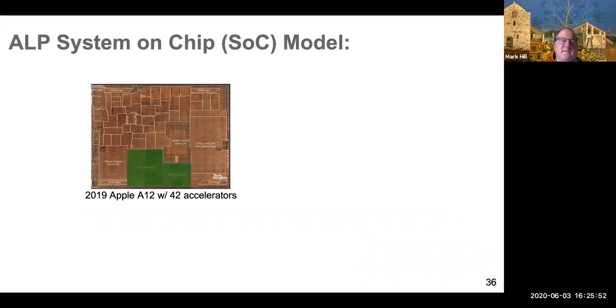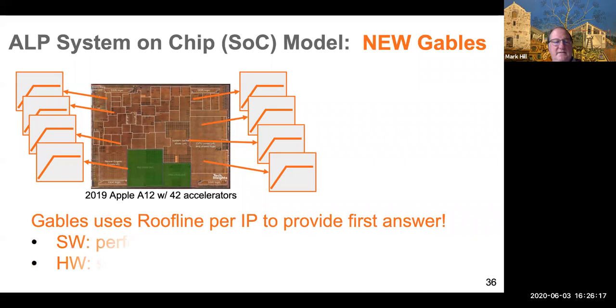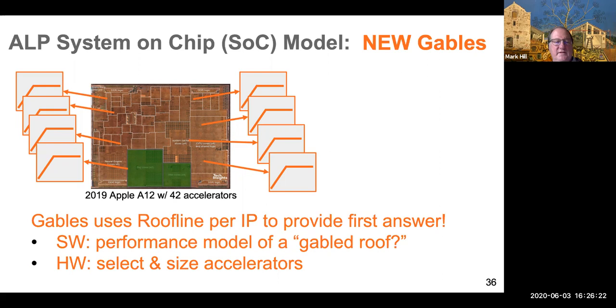So it would be nice to sort of do a Roofline for these 42 accelerators. Well, I couldn't figure out how to do a simple Roofline. But it does kind of look, if you squint your eyes, that you might be able to do a Roofline for each IP block, the accelerators and the CPUs. And so maybe we could do a model where we have a whole bunch of Rooflines, and then we somehow mash them together to get a prediction for the whole chip. And that's exactly what Gables does. It uses a Roofline per IP as the first answer, and it then models the performance as a gabled roof, which I'll show you in a second. And it gives you some little sense of whether to, how to select and size the accelerators.